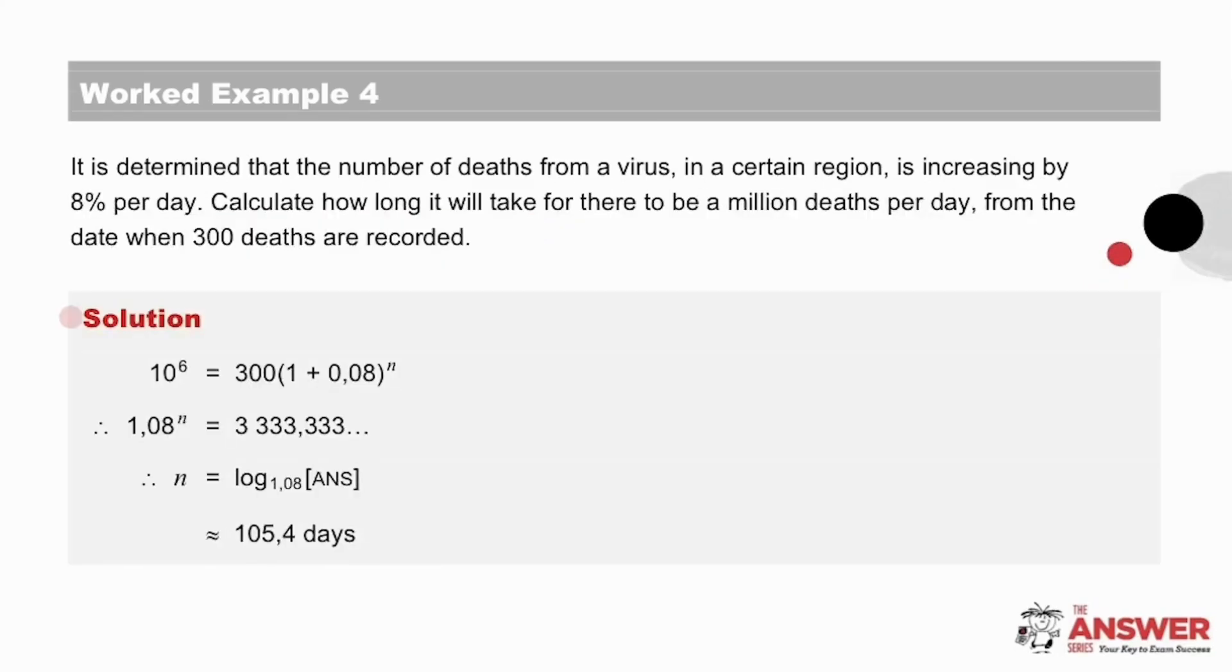Let's have a look now at the solution with a few tips along the way. When we have to work with large numbers such as a million, it is common to make a typing error on the calculator. So a way to eliminate this possibility is by typing 10 to the power 6, which can be safer. Then looking at the question, did you correctly select the compound increase formula for this question? Now if we look at the substituting, the 1.08 is the 1 plus 8% per day. The million divided by 300 gives us this number here.